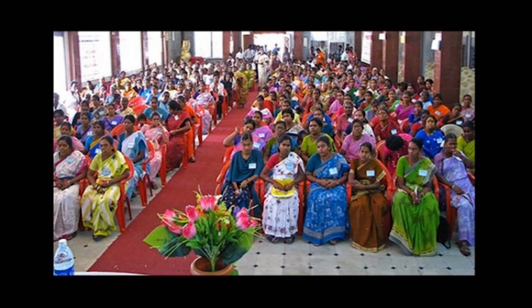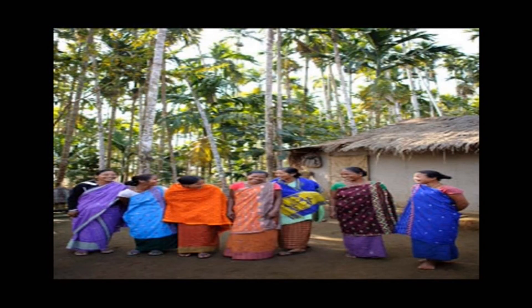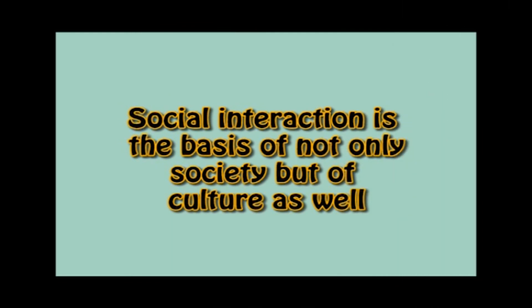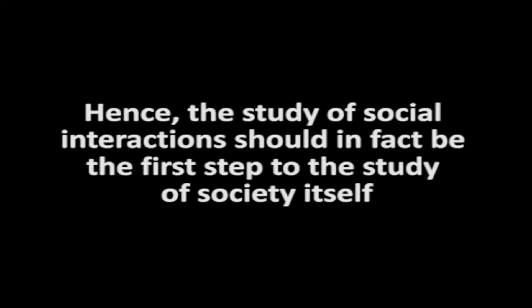Conclusion: The very roots of society are based on social interactions. Hence, the study of social interactions is not only important but actually inevitable and essential for sociologists. Social interaction is the basis of not only society but of culture as well; both culture and society are the products of social interaction. Society has risen out of social interactions, and they form the ground on which culture arises, ensuring its continued existence. Hence, the study of social interactions should in fact be the first step to the study of society itself.